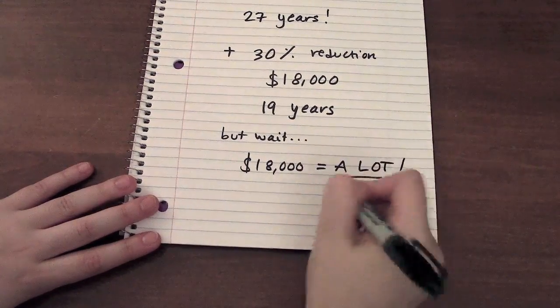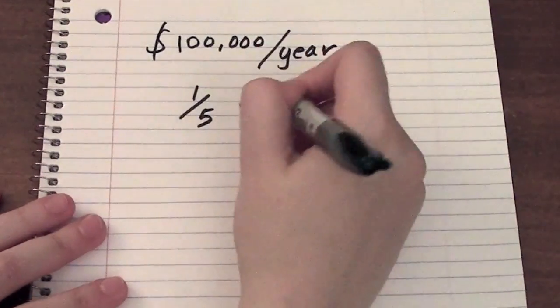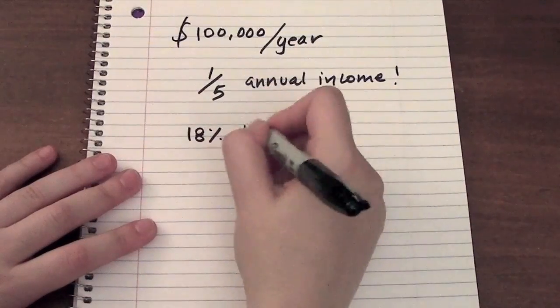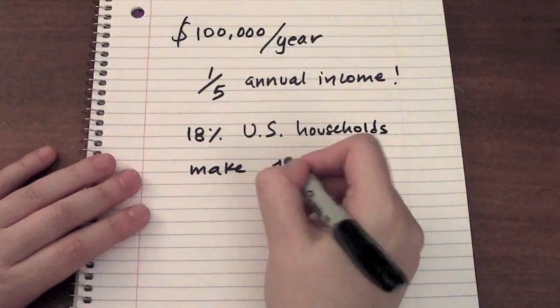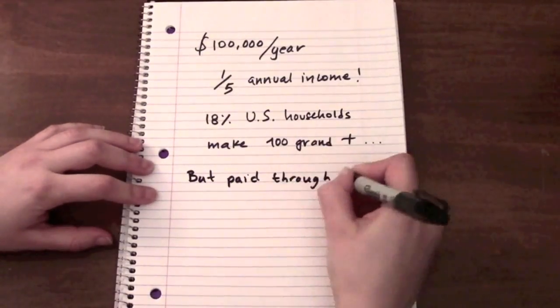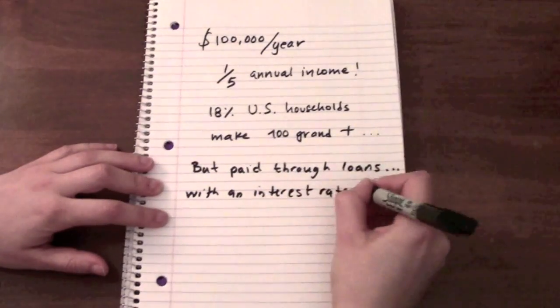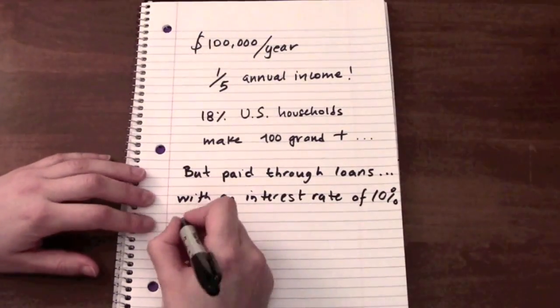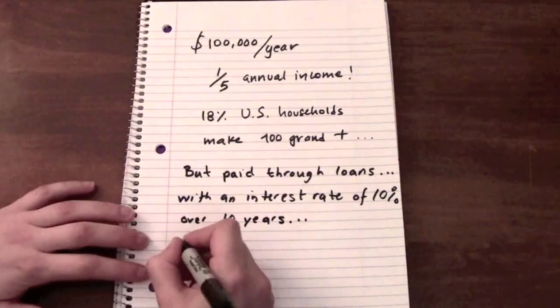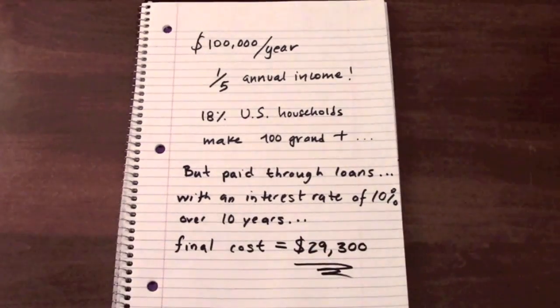However, in reality, $18,000 is a lot of money. If you make $100,000 a year, the cost of the system would be around one-fifth of your annual income, yet only 18% of households make above $100,000. Not to mention, most individuals would take a loan to purchase their panels, so the present worth cost of the system would be affected by a nominal interest rate of, say, 10% over maybe 10 years. Then the cost of the system would be around $29,000, not even including the annual maintenance and repair.